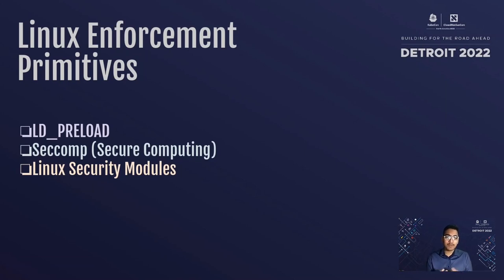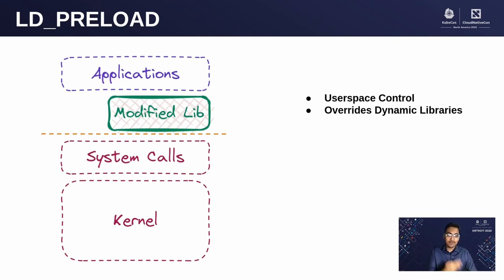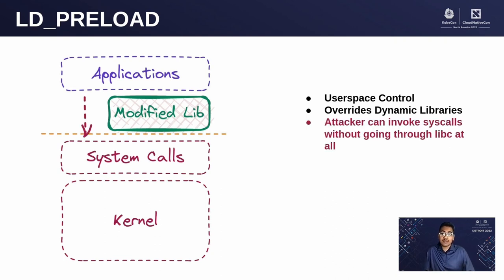What kernel primitives do we have for inline enforcement? We have LD_PRELOAD, seccomp, and Linux Security Modules. LD_PRELOAD is a user-space control — it overrides dynamic libraries and applications go through these libraries, giving us fine-grained access control. But attackers can invoke syscalls without going through the dynamic libraries at all. For example, Go applications statically embed their binaries with library files, so they never need to go through the modified library.